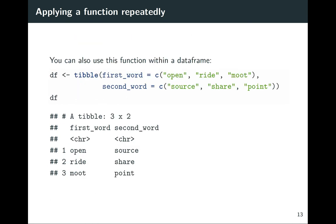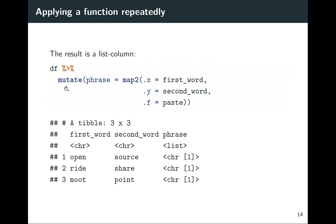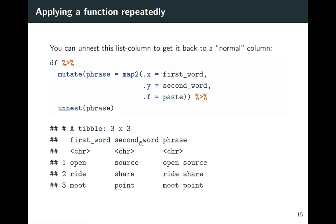We can do this within a data frame as well. Starting with a tibble that has a column called first_word and a column called second_word, we can use mutate with map2 to do the same thing, giving us a new list column. Then we use unnest with the cols argument to get back to a classic data frame where the column is unnested and shows the specific pasted values.